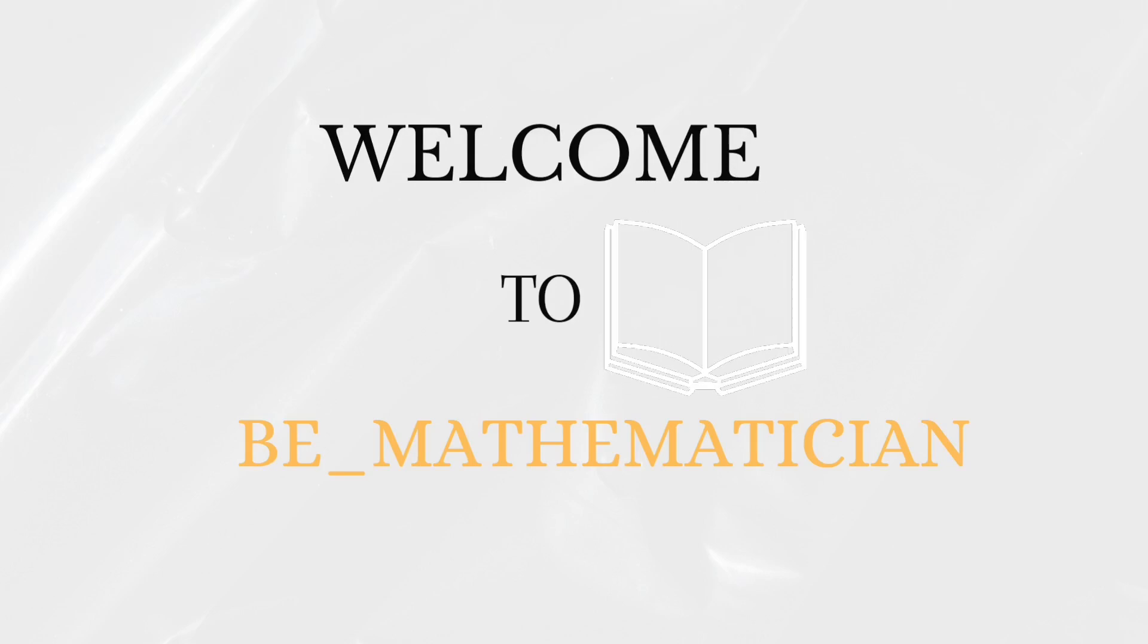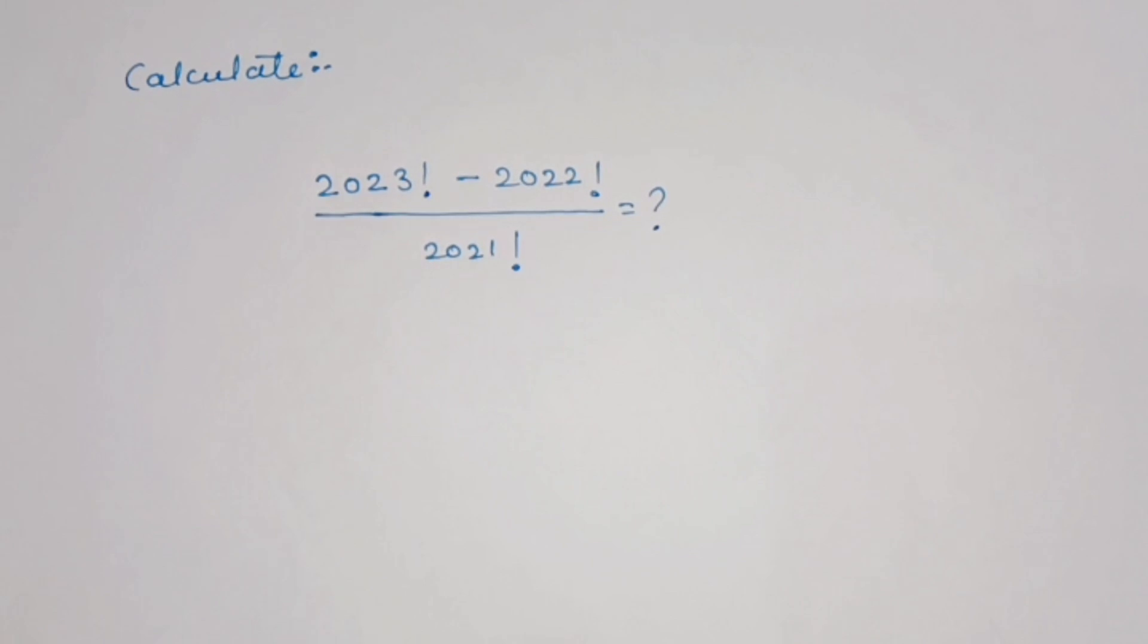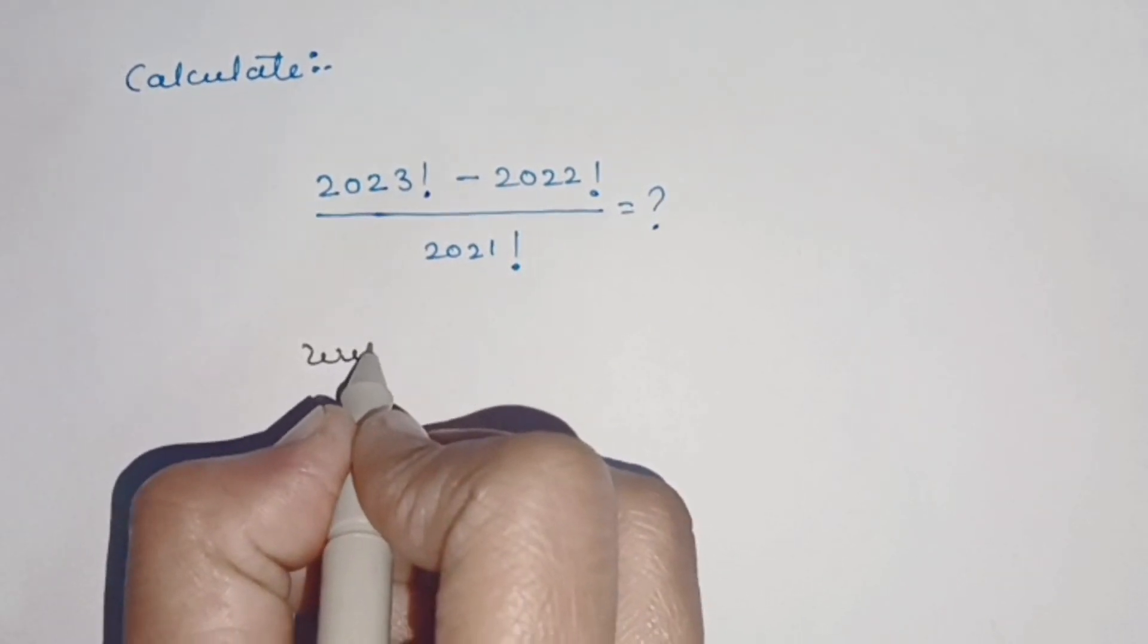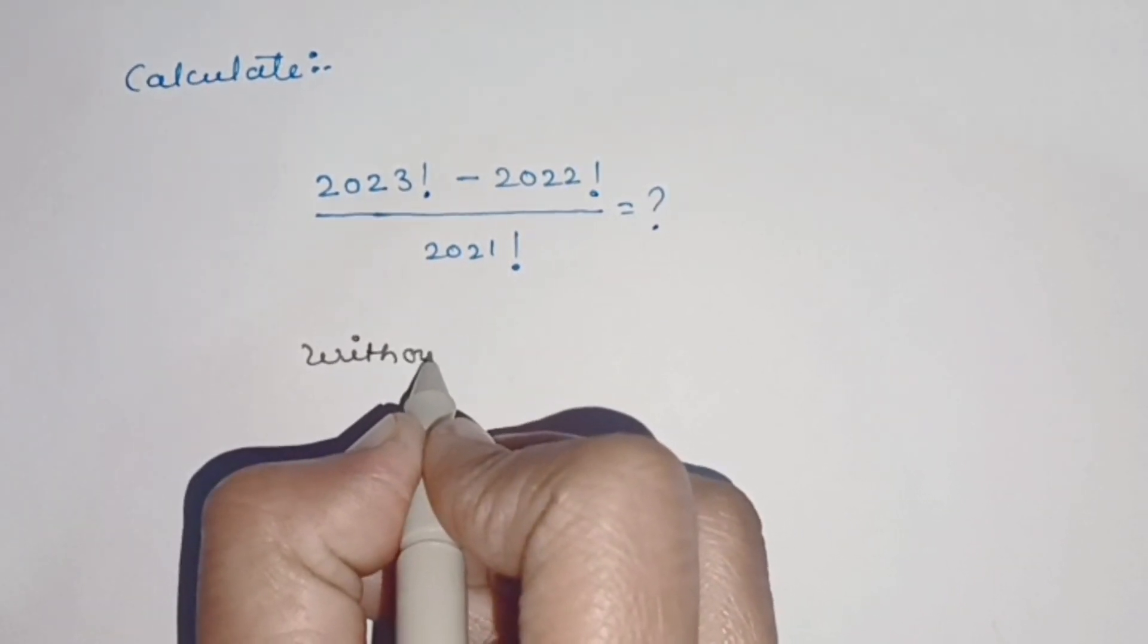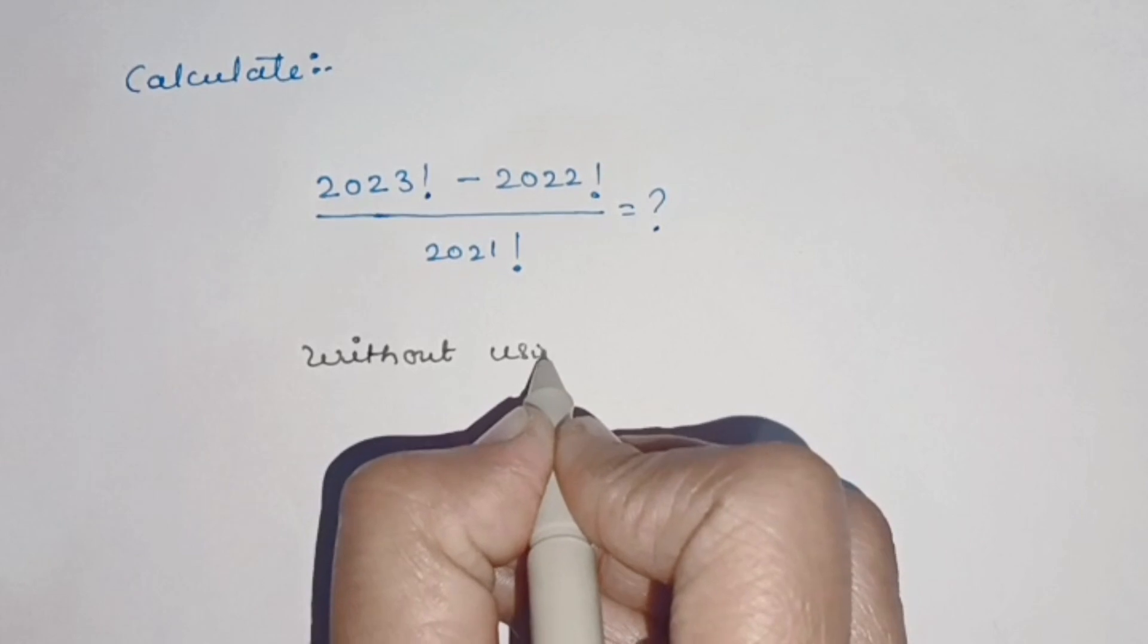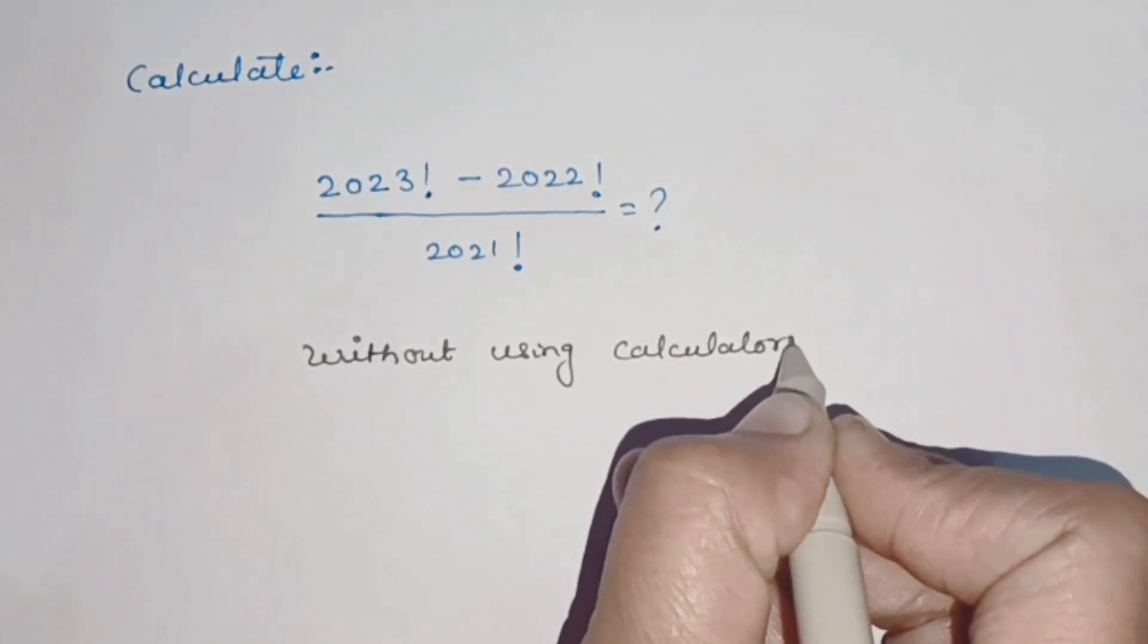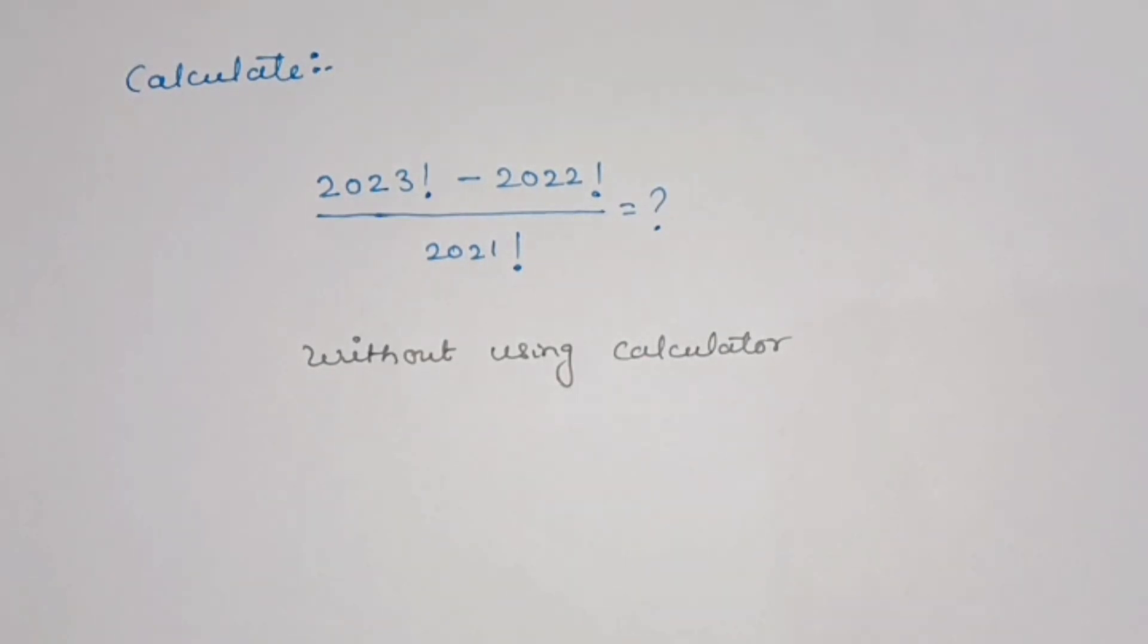Hello friends, welcome to Be Mathematician. In today's video, we are going to solve an amazing math Olympiad problem: calculate the value of (2023! - 2022!) / 2021! without using a calculator.